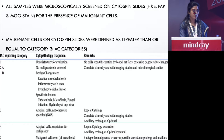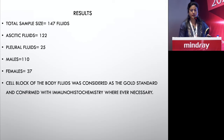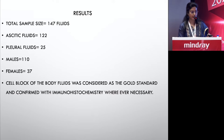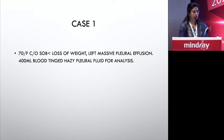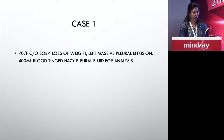Malignant cells on cytospin slides were defined as those categorized as greater than or equal to category 3 according to IAC guidelines. Of 147 fluids analyzed, four were positive on the analyzer. Case one is a 75-year-old female who presented with breathlessness and weight loss, with a left massive pleural effusion. Around 400 ml of blood-tinged hazy pleural fluid was received for analysis.